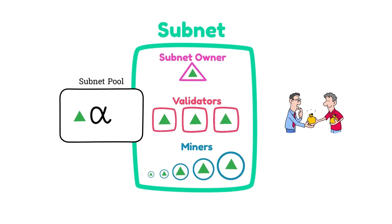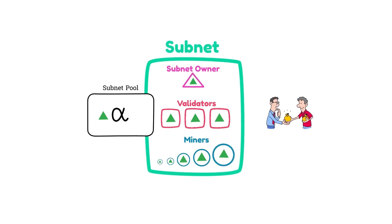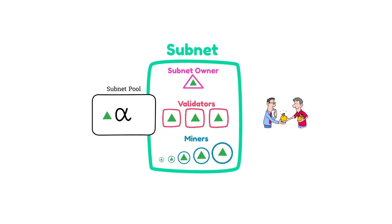BitTensor is a decentralized commodity marketplace, and the price of alpha represents the value of each commodity.